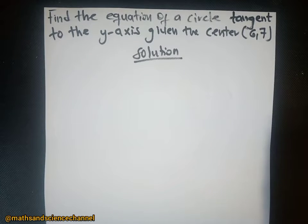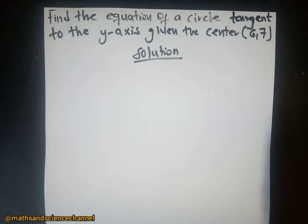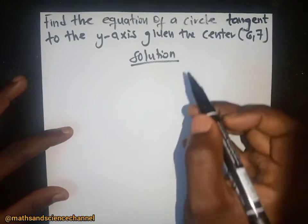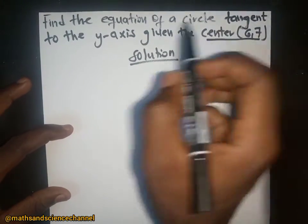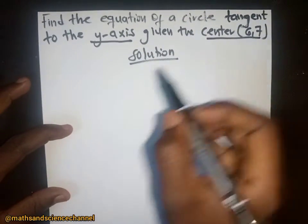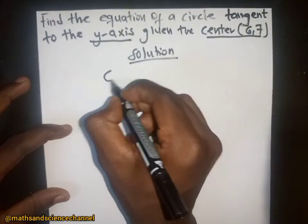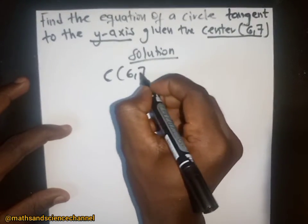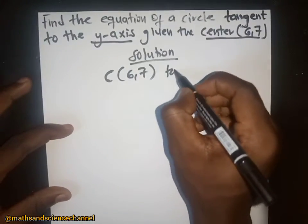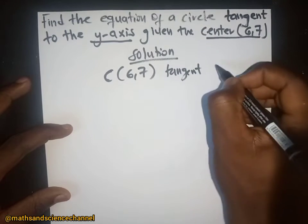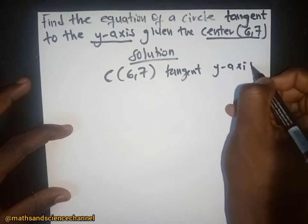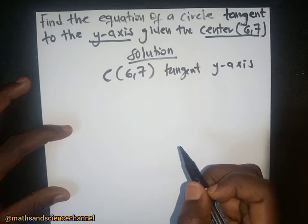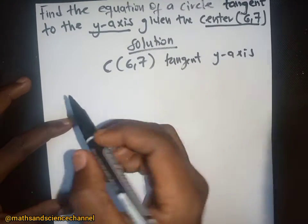Hello students, welcome once again to my channel. In this section we are going to find the equation of a circle tangent to the y-axis, given the center six and seven. The most important things to take note of are the center and the y-axis. The center is given as six and seven, and the circle is tangent to the y-axis.